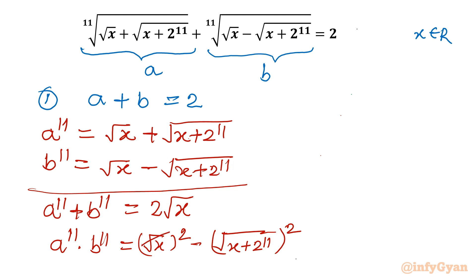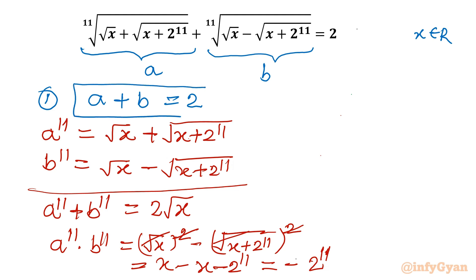The square and square root cancel. What is left is x − (x+2)^11... so actually x minus (x+2), giving us minus 2 raised to the power 11. So the ultimate conclusion is: first equation a + b = 2, and second equation (ab)^11 = (−2)^11. The left hand side is (ab)^11.